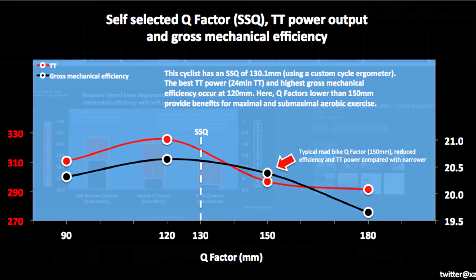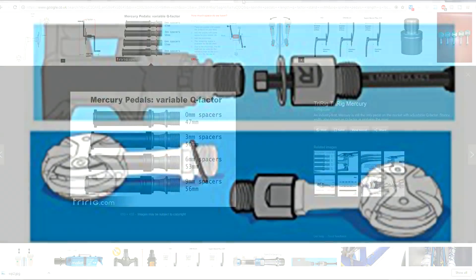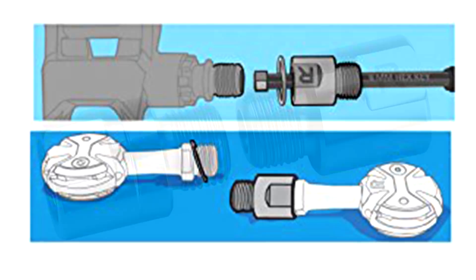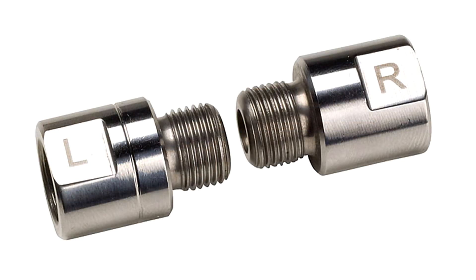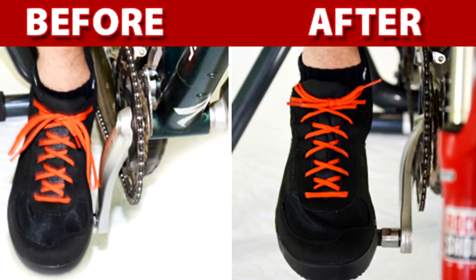So how do you modify your Q Factor or stance width? One way is to change the pedal axle. Another is to put washers between the cranks and the pedal axle — but be careful, because if you stack them way out, you may reduce the rigidity of the axle in the crank, and that area gets a lot of force. You can get small metal extenders that take it out about a centimeter or so, and they are adjustable.